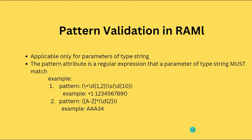Welcome back. In this session, let's see how to validate the pattern in RAML API specification. This pattern validation is applicable only for parameters of type string. If you have a parameter of type number or integer, you cannot use this pattern validation. For pattern validation we use an attribute called 'pattern', and it's a regular expression that a parameter of type string must match. If the value is not matching the pattern, we will get an error.